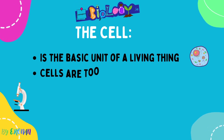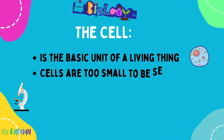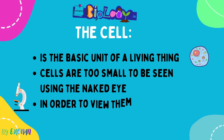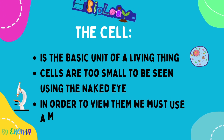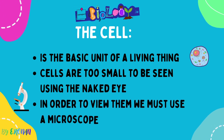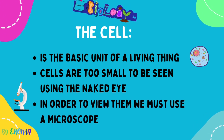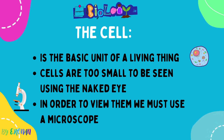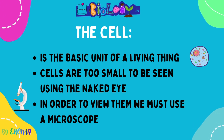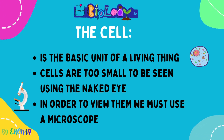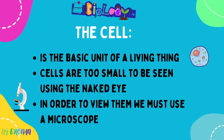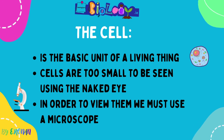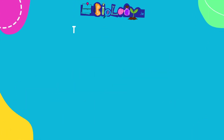The cell definition is the basic unit of a living thing. Cells are way too small to be seen using our naked eyes, so in order to view them we must use a microscope. Please learn it: basic unit of a living thing. From here, before we go on to the structural difference between plant and animal cells, we are going to look at the microscope.